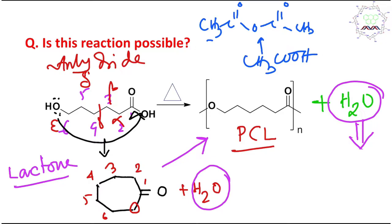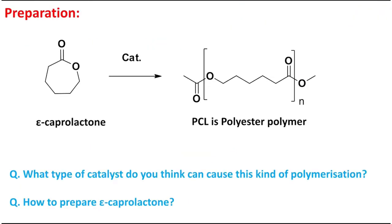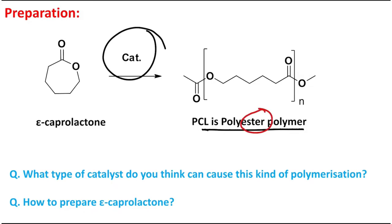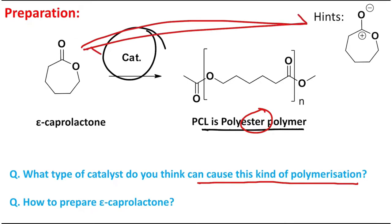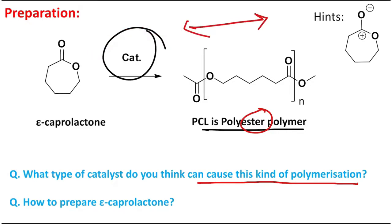Conversion of this lactone to PCL is more profitable because no water elimination occurs during polymerization. This is done in the presence of a catalyst, and the product is a polyester. What type of catalyst can cause this polymerization? Consider the resonance of the carbonyl: the negative charge density is on the carbonyl oxygen and the positive charge is on the carbonyl carbon.